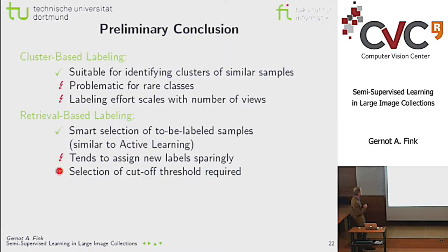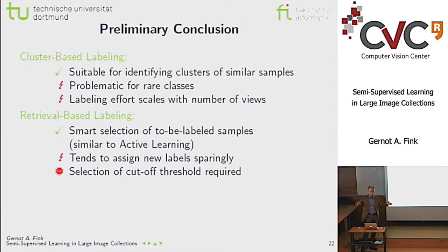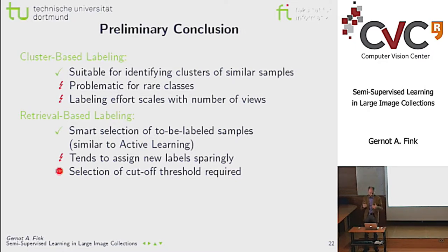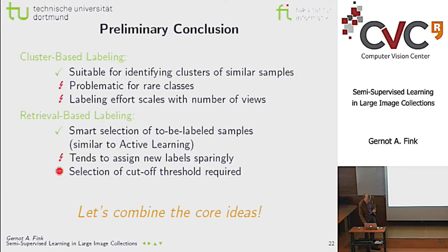Summarizing the tradeoffs: cluster-based labeling is good for large groups but problematic for rare classes, and labeling effort scales with the number of views. Retrieval-based labeling only requires one label per exemplar rather than per view — smarter and similar to active learning — but tends to assign labels sparingly and has a critical cutoff threshold parameter. It would be interesting to combine the two ideas.